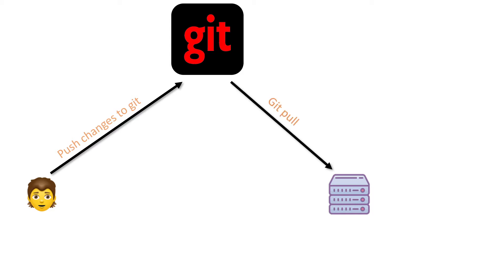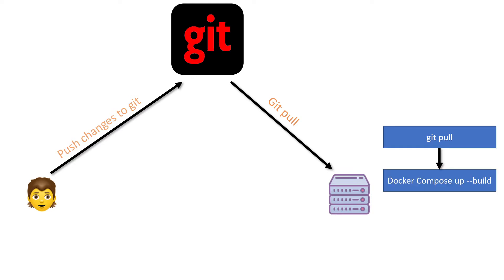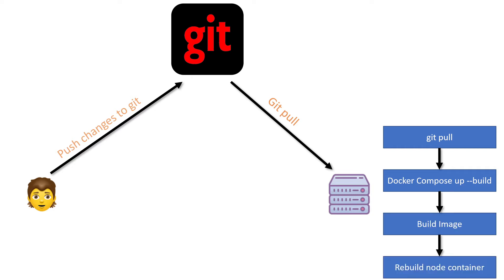Once we get the updated code, we're going to run Docker compose up --build. That's going to trigger a rebuild of the node image, and then once we build the image, we can rebuild a brand new node container using that new node image.